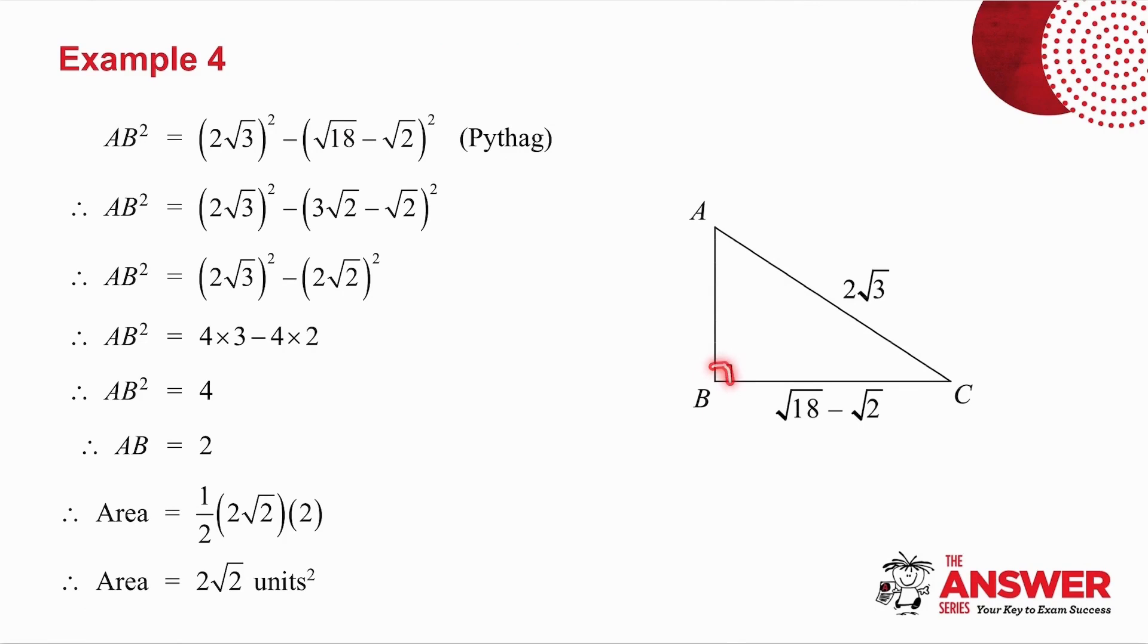Notice I have a right angle, which means I can use Pythagoras. So AB squared is equal to AC squared minus BC squared. Root 18, I can write as root 9 times 2. The square root of 9 is 3, and I'm left with root 2. 3 root 2 minus root 2 is 2 root 2. 2 squared, root 3 squared, root 3 squared, root 2 squared. So I get 12 minus 8, which is 4. If AB squared is 4, it means that AB is 2. So this side is 2. I've worked out BC to be 2 root 2. So when I get the area, it's half base times height, which gives me an answer of 2 root 2 units squared.